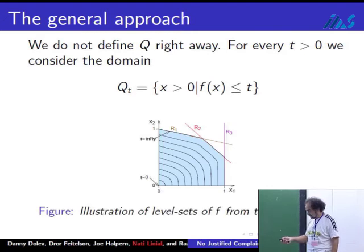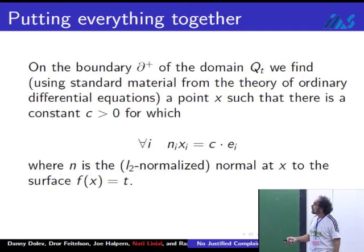My solution is going to come from a passage to the limit as t goes to infinity. Think of this picture this way. This polytope, or polygon in this case, is P. These are the Q_t's, and what I'm going to do now is solve this problem using standard stuff from ordinary differential equations for each Q_t, and I'm going to pass to the limit as t goes to infinity.